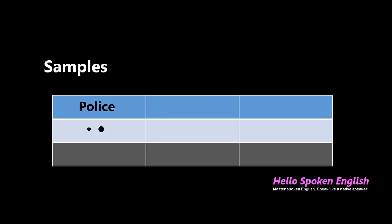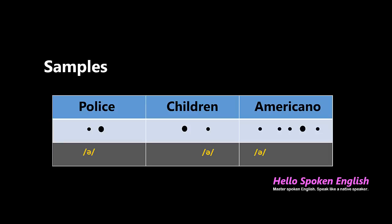The first example: 'police' — the second vowel is the stressed syllable, so you need to pronounce the first vowel quickly and silently: p'LICE, not PO-lice. 'Children' — the first vowel is the stressed syllable, so it sounds like CHIL-dren. The last one: 'Americano' — the fourth vowel is stressed and the first vowel should be sounded silently and quickly: 'meri-CA-no. If you stress the first vowel like A-mericano, native speakers may not understand you.